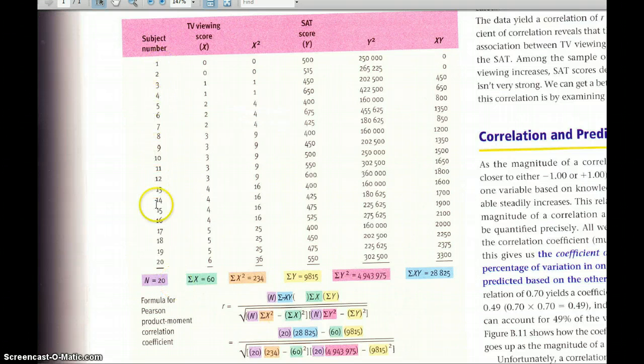So you need to first of all just, you've got your column of subject numbers. You don't really need this, the only reason for this is to show you what your n is, and n is simply the number of subjects that you have, so n is 20.